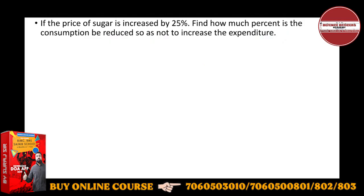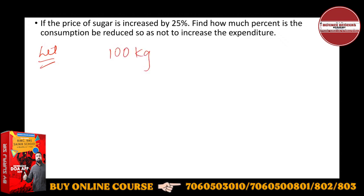The price of sugar is increased by 25%. How much percent should the consumption be reduced so as not to increase the expenditure? Okay, so consumption you have to take also — you can take it in kgs. Let's see how I take it. Suppose 100 kg — we eat 100 kg of sugar.